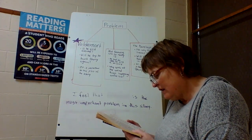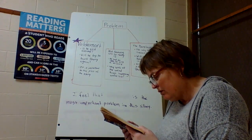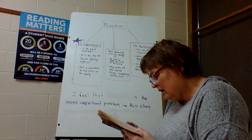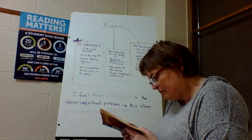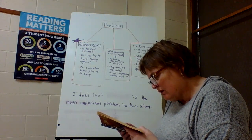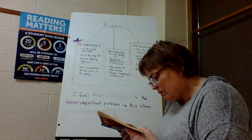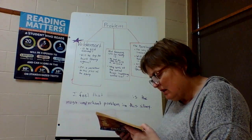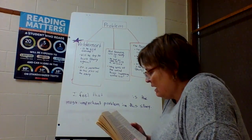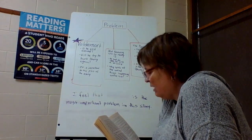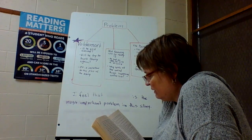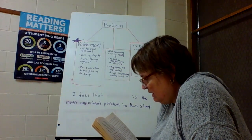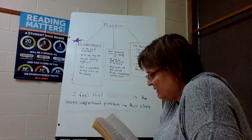The Leaky Cauldron was a famous place — a tiny, crumbly-looking pub. If Hagrid hadn't pointed it out, Harry wouldn't have noticed it. People hurrying by didn't glance at it at all — their eyes slid from the big bookshop on one side to the record store on the other as if they couldn't see the Leaky Cauldron at all. Harry had the most peculiar feeling that only he and Hagrid could see it. Before he could mention this, Hagrid had steered him inside. For a famous place, it was very dark and shabby. A few old women were sitting in the corner drinking tiny glasses of sherry, one of them smoking a long pipe. A little man in a top hat was talking to the old bartender, who was quite bald and looked like a toothless walnut. The low buzz of chatter stopped when they walked in.